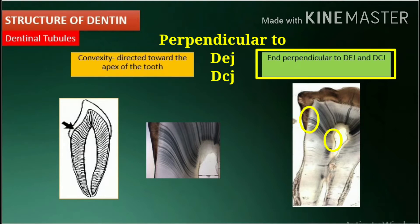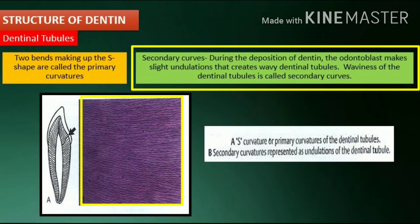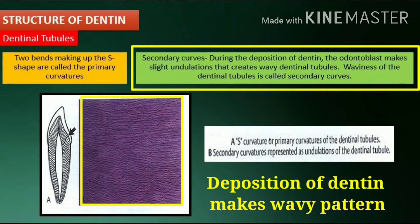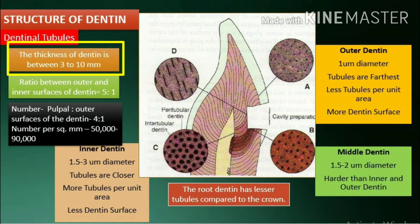The tubules are perpendicular to the dentino-enamel junction and cemento-enamel junction. The two bends making up the S-shape are called primary curvatures. Secondary curves are slight undulations created by the odontoblast during dentin deposition, producing wavy dentinal tubules. The waviness of the dentinal tubules is called secondary curves. The thickness of dentin is between 3 to 10 mm.